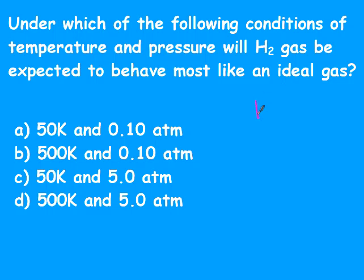For the most ideal gas conditions, we want low pressure and high temperature. The highest temperature is either B or D, and the lowest pressure is B—so B is the answer.